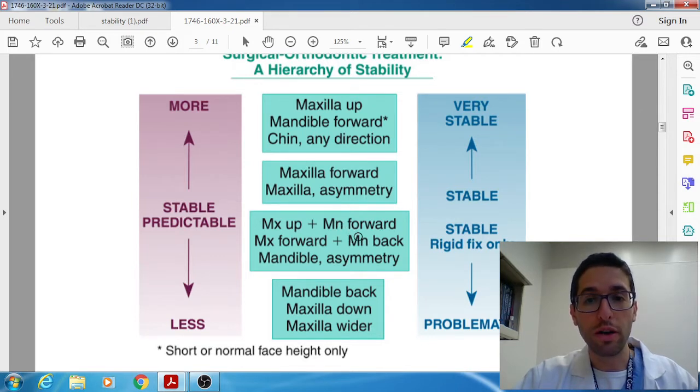But in this category of these are still stable provided that they're used with rigid fixation would be combination two jaw surgeries so maxilla up mandible forward meaning how we would treat a class 2 patient and as well as maxilla forward mandible back how we would treat a class 3 patient. Both of those were considered stable.